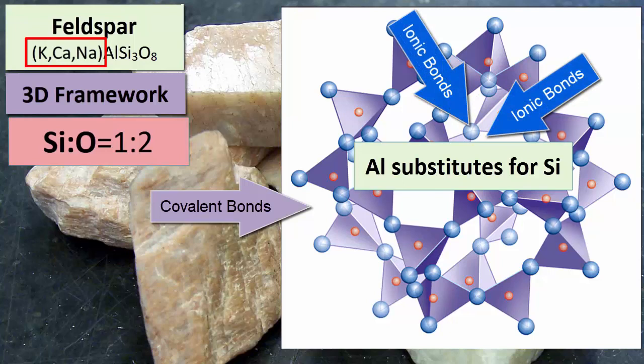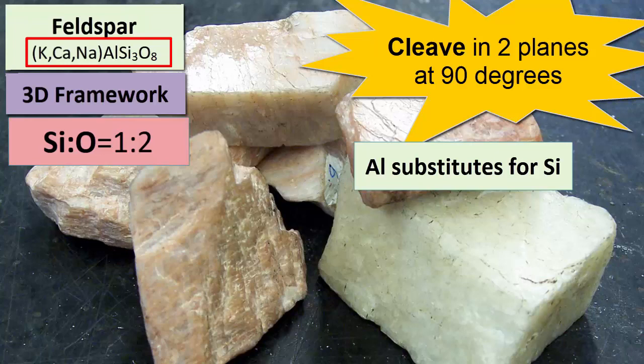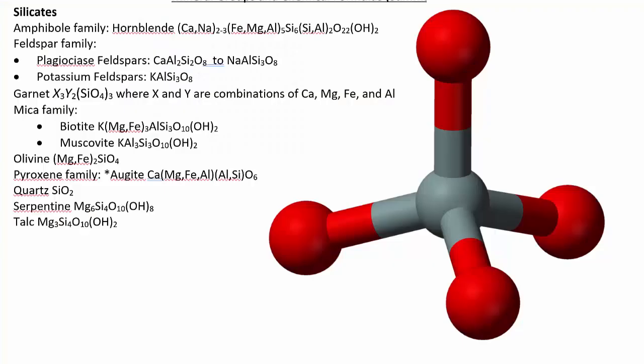This is what we see in the feldspar family. The chemical formula for this family is, generally, potassium, calcium, or sodium, aluminum, three silicons, and eight oxygens. Feldspars, because of the way the ionic bonds are aligned, cleave at right angles.